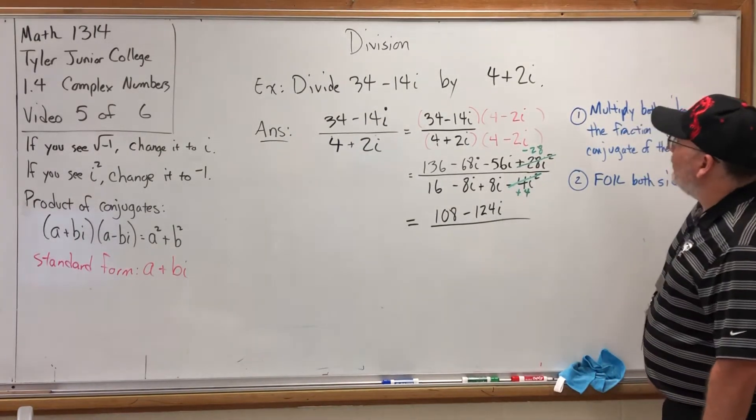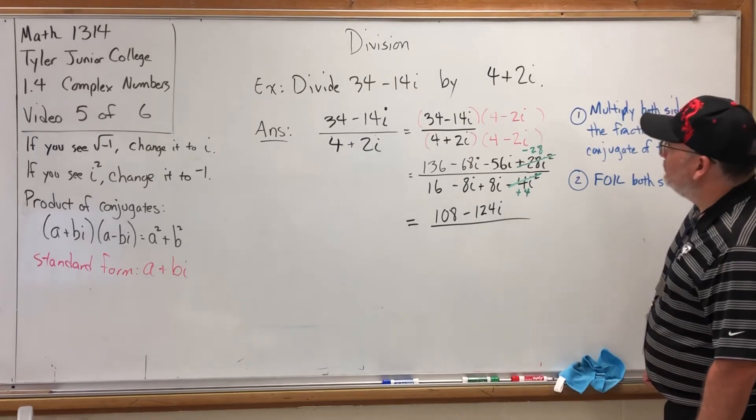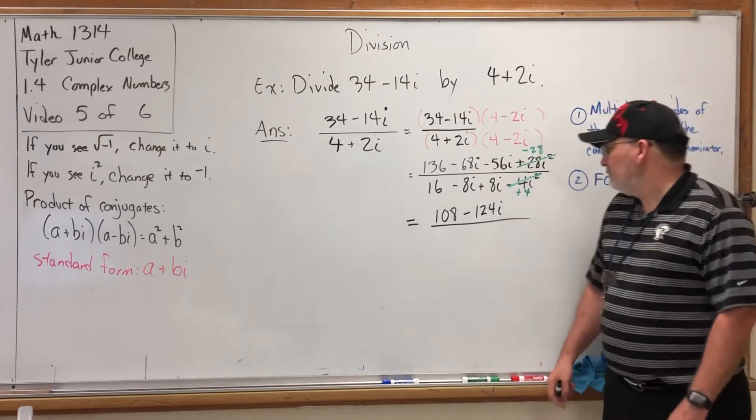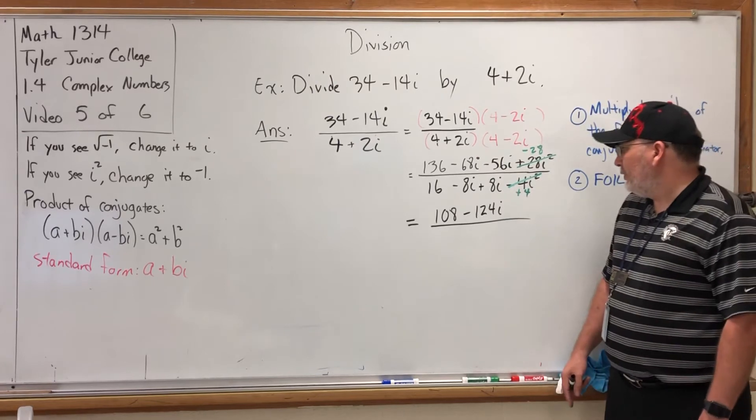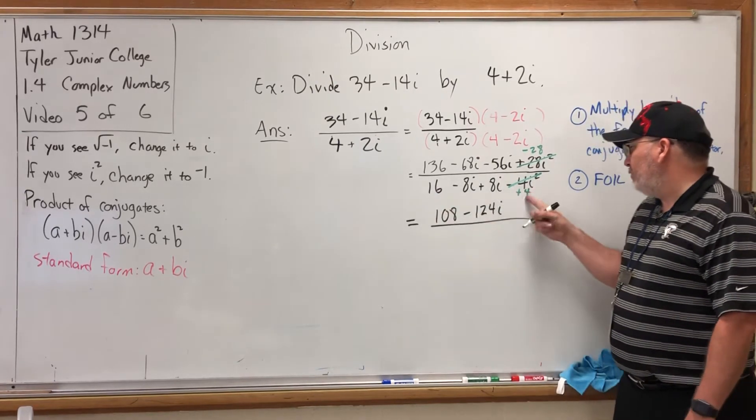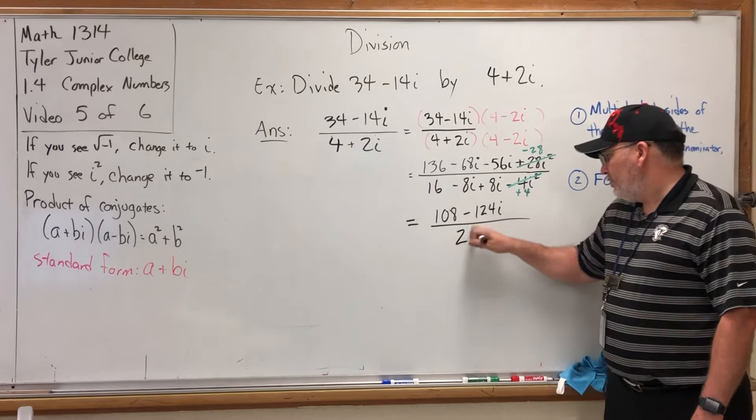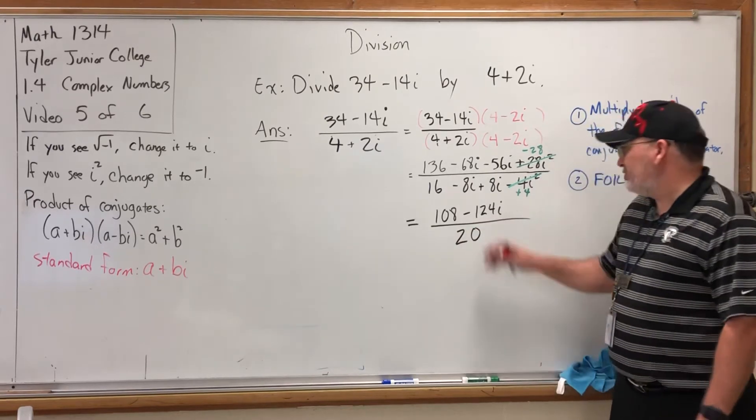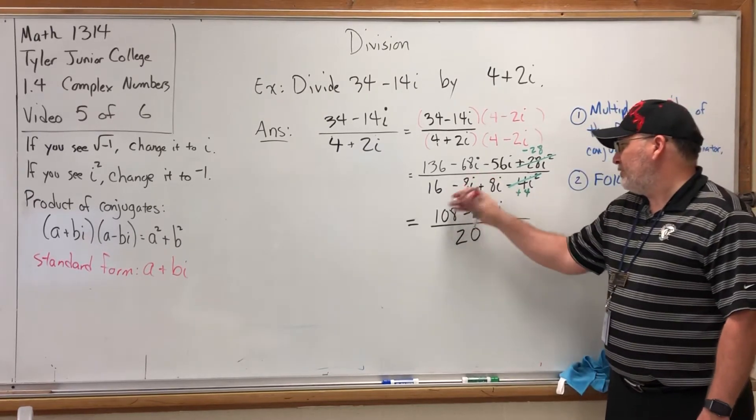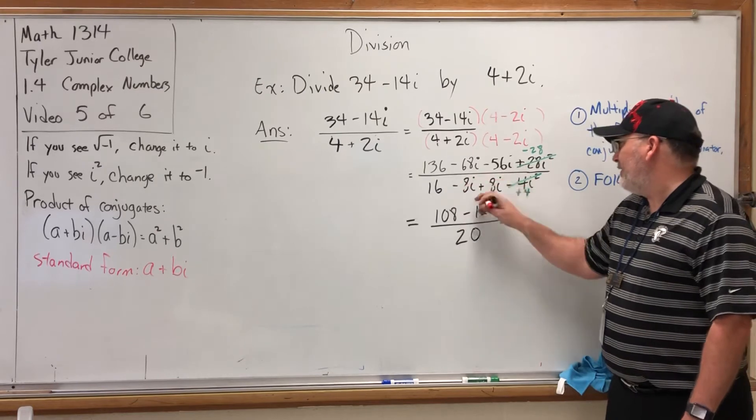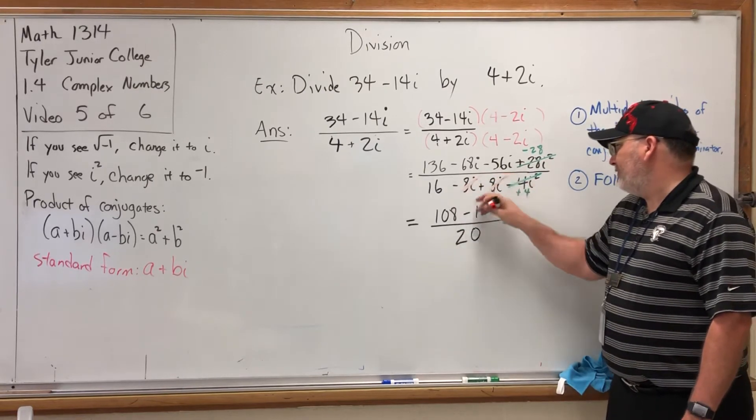In the denominator, it cleans up a lot more nicely. Eraser isn't doing what I thought it was going to do. But now look, in the denominator the real parts are 16 and +4, which is 20. But the imaginary parts cancel because that's what conjugates do.